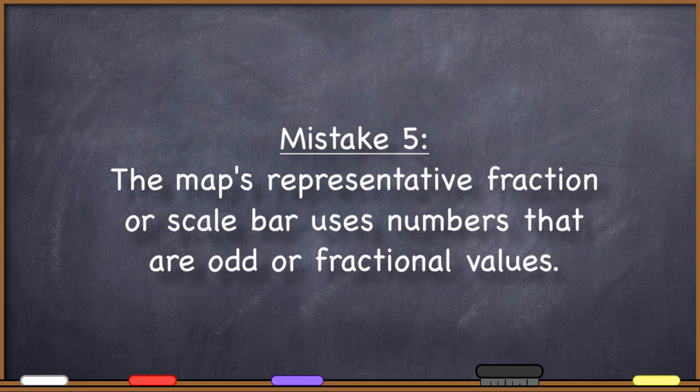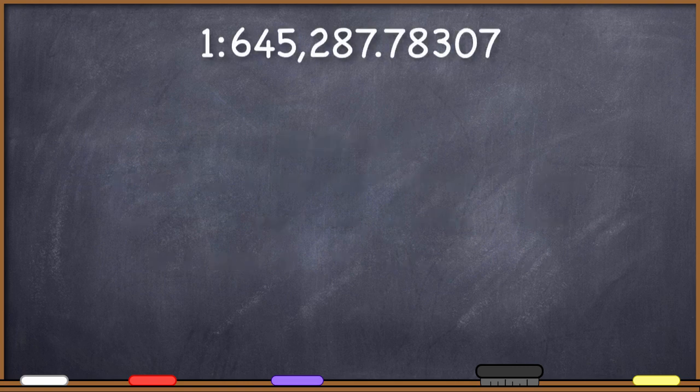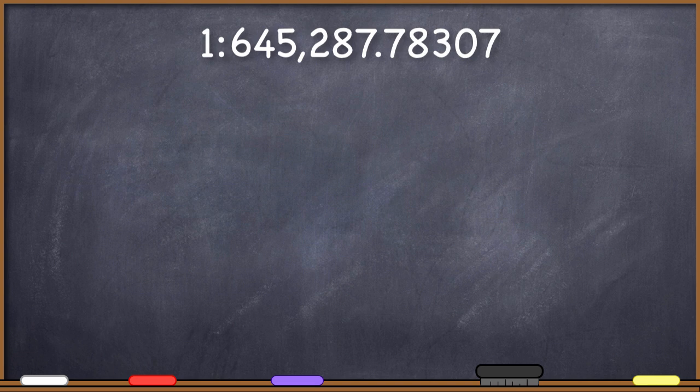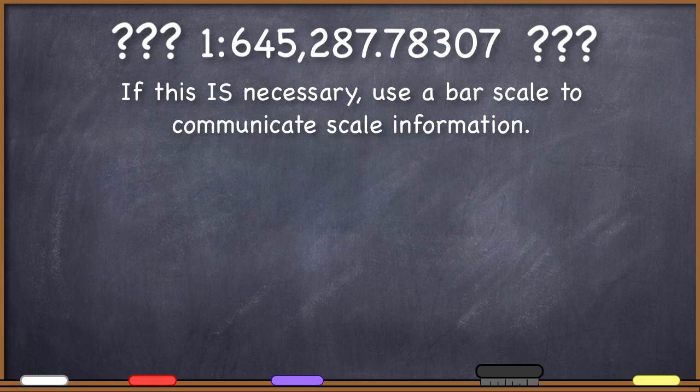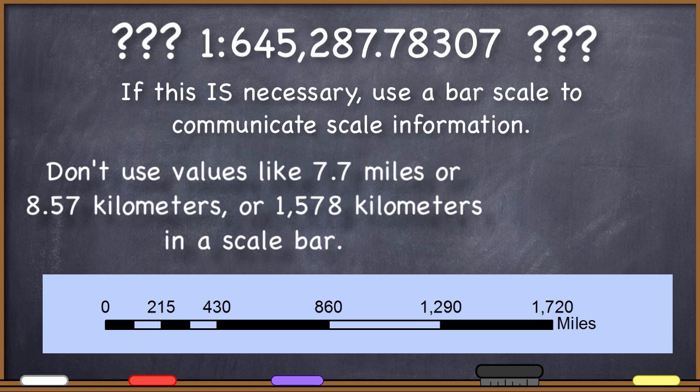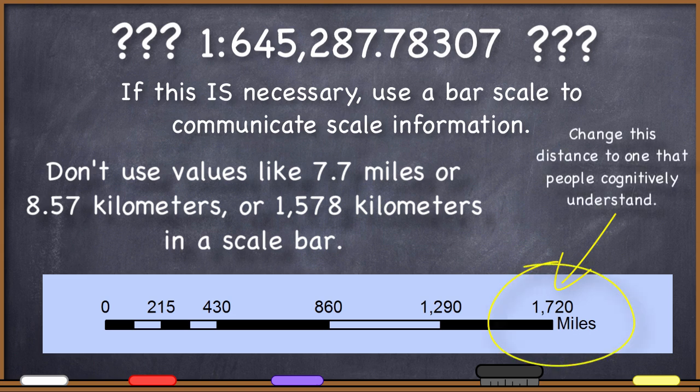Number five. The map's representative fraction or scale bar uses numbers that are odd or fractional values. Why would someone deliberately create a map to the scale of 1 to 645,287.78307? Worse, even in those situations where it might be necessary, why would that information be communicated in a representative fraction and not a nice and neat scale bar with round numbers? And when a scale bar, also called a graphic scale, is used to communicate scale information, don't make the scale bar run to 7.7 miles or 8.57 kilometers or 1,578 kilometers. It just doesn't make sense. Those are not numbers that people cognitively understand. Seeing these kinds of scales on maps demonstrates that the person knows enough about maps to know that there needs to be a scale, but just enough to think that default scales auto-generated by the software package automatically creates an acceptable scale. It does not.